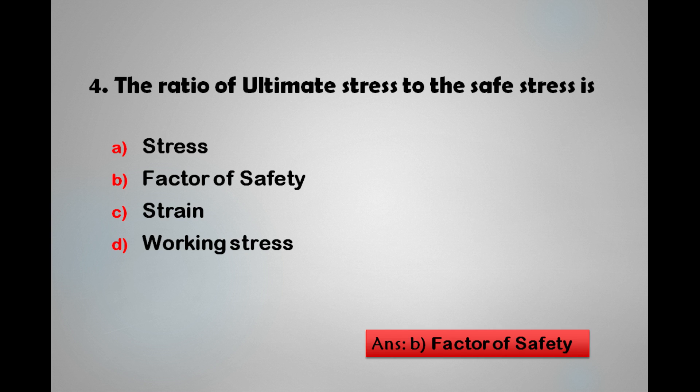The ratio of ultimate stress to the safe stress is called as: A) Stress, B) Factor of Safety, C) Strain, D) Working Stress. The answer is: the ratio of ultimate stress to the safe stress is known as factor of safety.